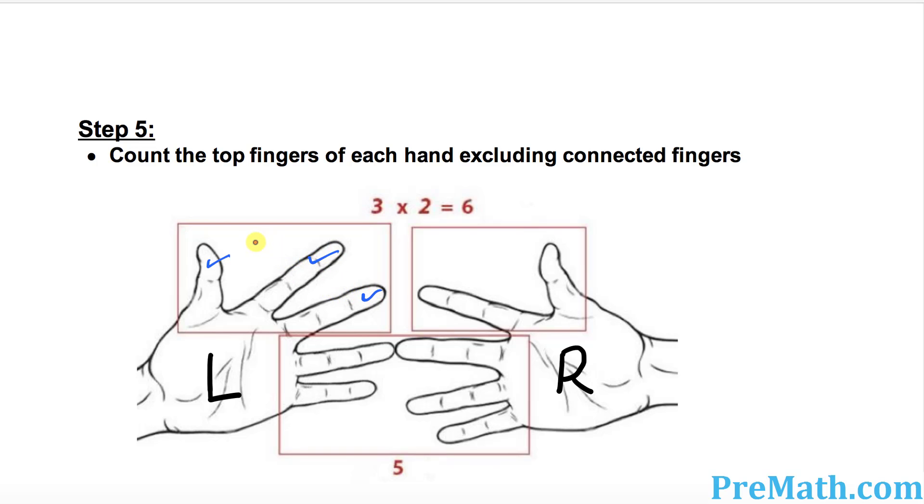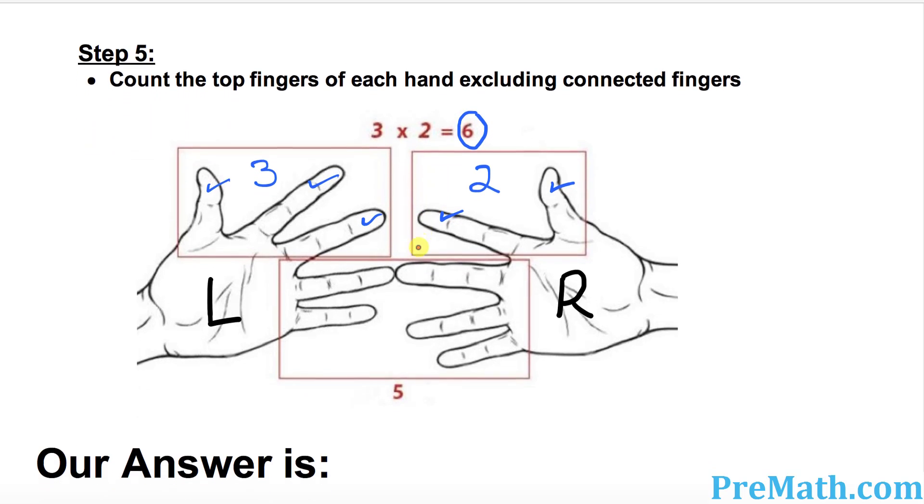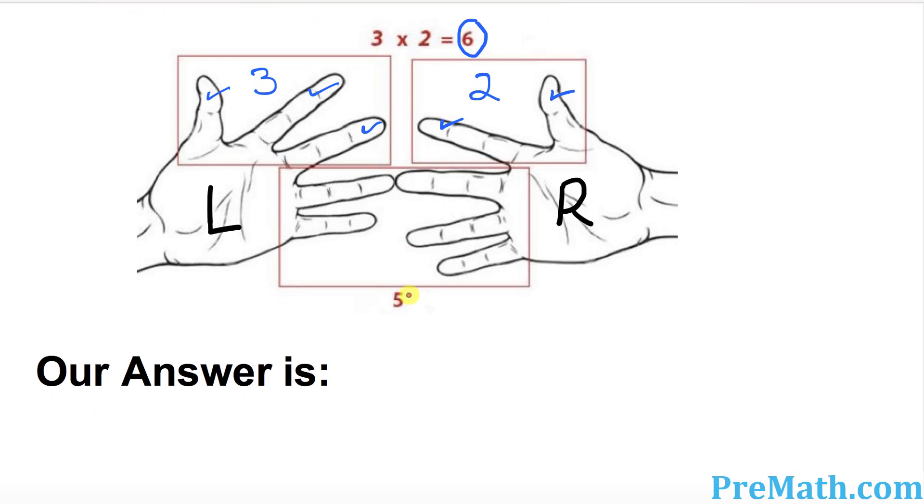So I want you to put down 3 right up here. And on the right hand side, top fingers are 2. Put down 2. So 3 times 2 equals 6. Our final answer: the bottom number comes first, so put down 5, and then the top number is 6. Our complete answer is 56.